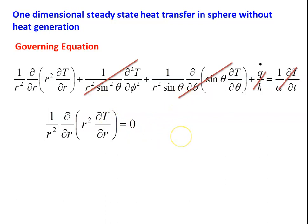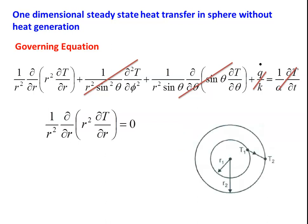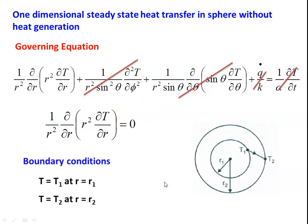We now solve this equation for a hollow sphere of inner radius r₁ and outer radius r₂. The inner surface temperature is T₁ and the outer surface temperature is T₂. The boundary conditions are: T = T₁ at r = r₁, and T = T₂ at r = r₂.